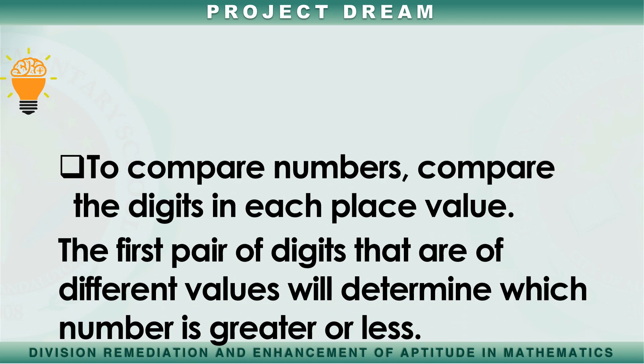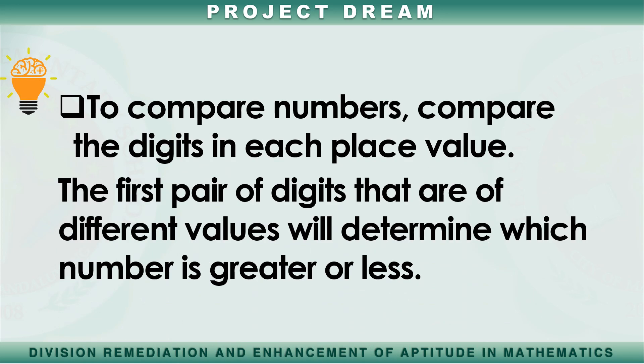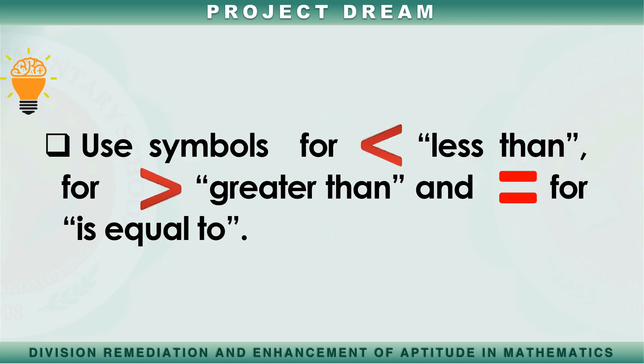Third, to compare numbers, compare the digits in each place value. The first pair of digits that are of different values will determine which number is greater or less. Lastly, use the less-than symbol, greater-than symbol, and equal-to symbol to show relationships between numbers.